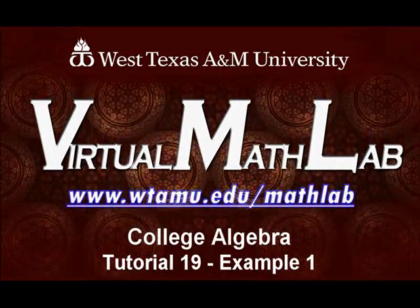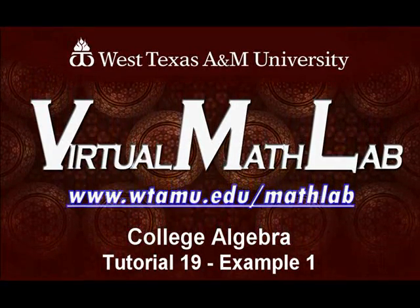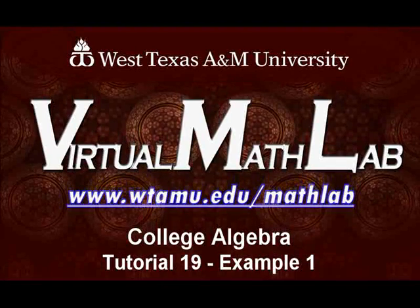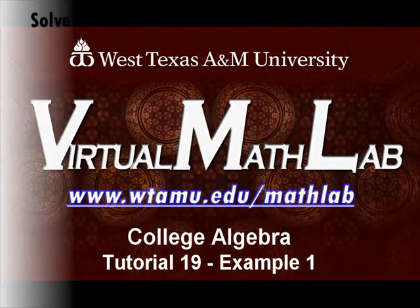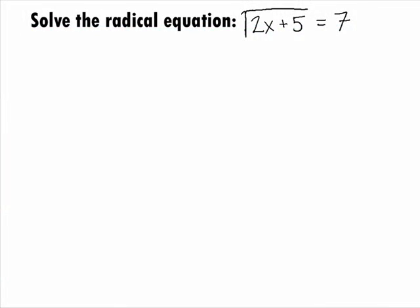Hi, welcome to the WTAMU Virtual Math Lab. This video will step you through College Algebra Tutorial 19 Example 1. In this example, we want to solve the radical equation, the square root of 2x plus 5 equals 7.